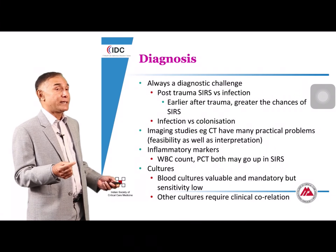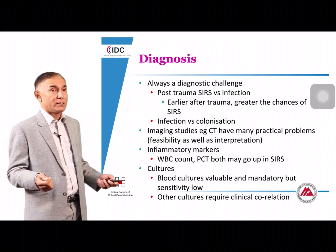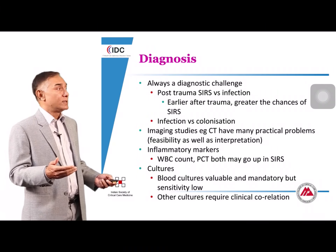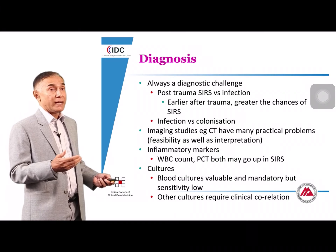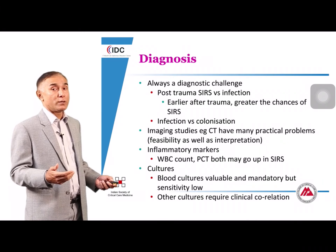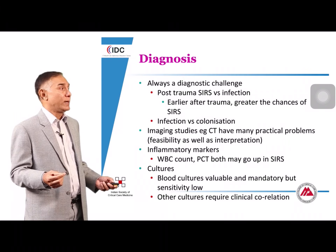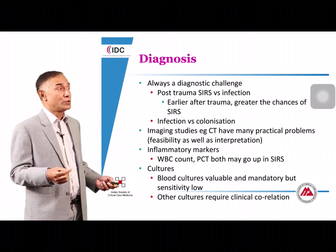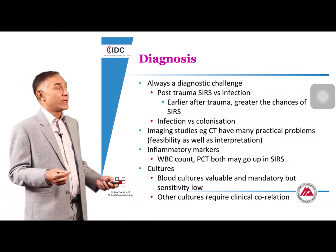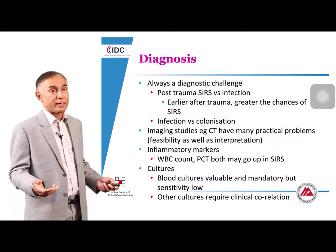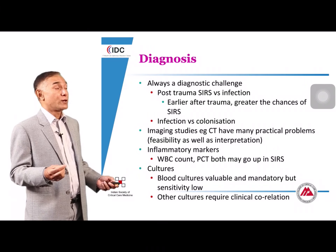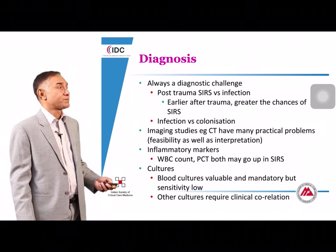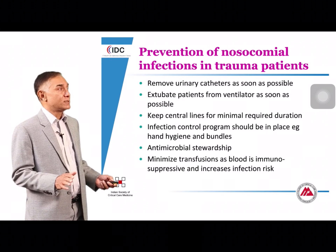Imaging studies have practical problems in trauma patients who have fixators and metallic implants, making transfers difficult. Inflammatory markers such as WBC count and procalcitonin are non-specific and can rise with SIRS. Blood cultures are valuable — a positive result is usually significant — though sensitivity is low. Other cultures from the endotracheal tube or local areas require clinical correlation to distinguish colonization from infection.